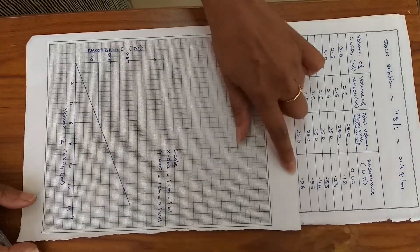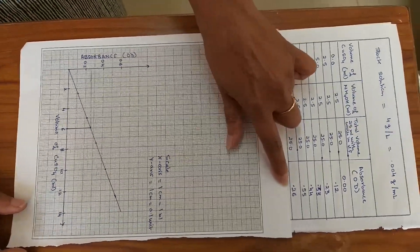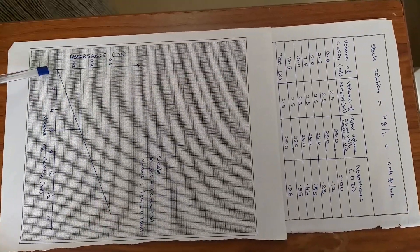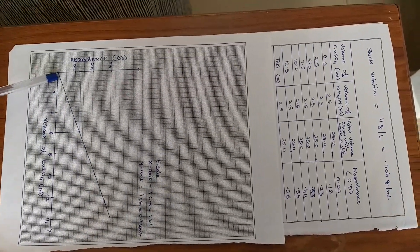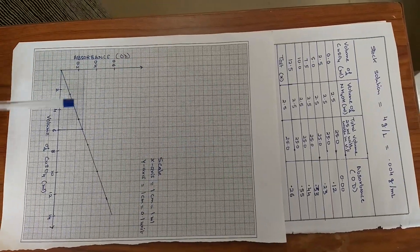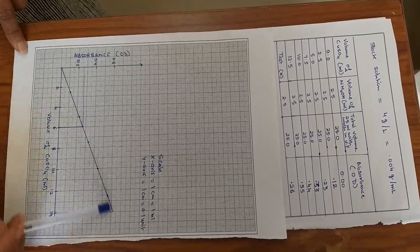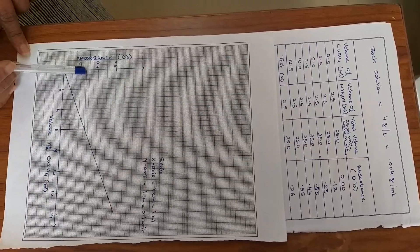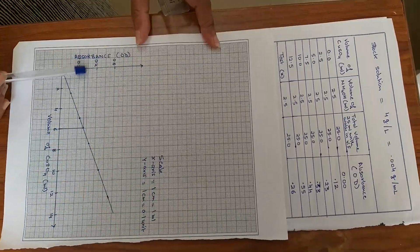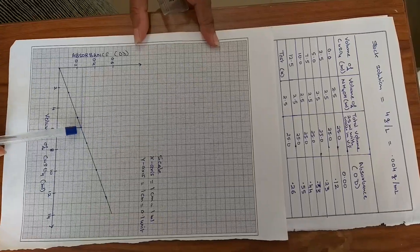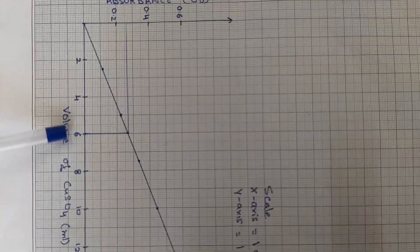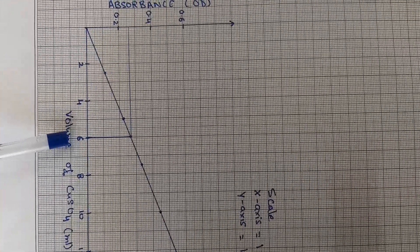The test solution gave an absorbance of 0.26. We get a straight line passing through the origin — this straight line should always pass through the origin (zero). On this straight line, we plot the absorbance of the test solution, 0.26, and join it with the line. Dropping a perpendicular on the x-axis, we get 6 ml — meaning the copper sulfate test solution corresponds to 6 ml.